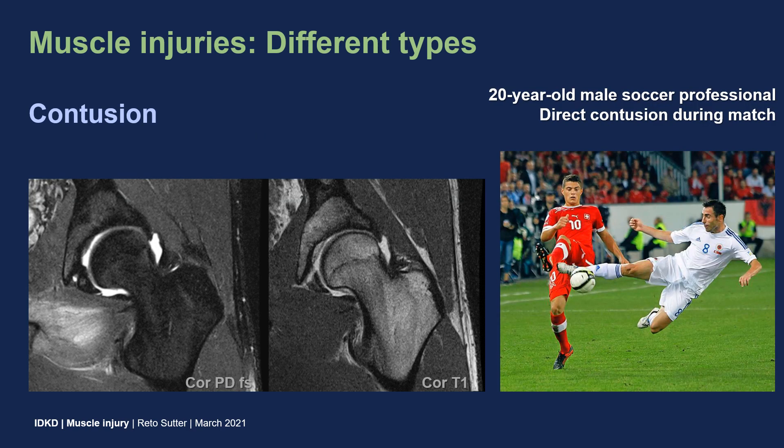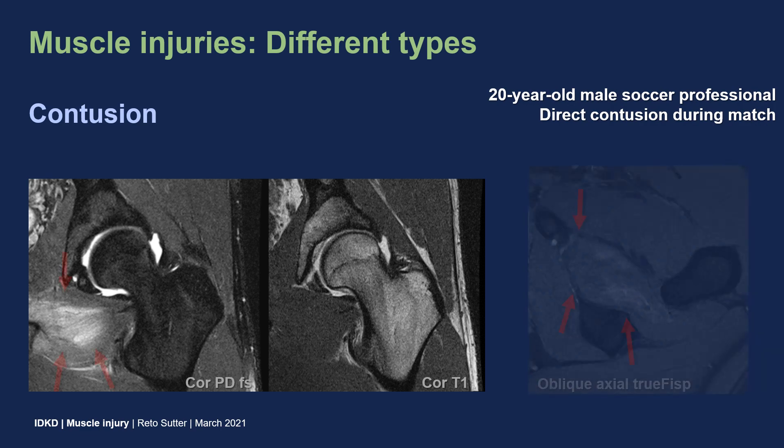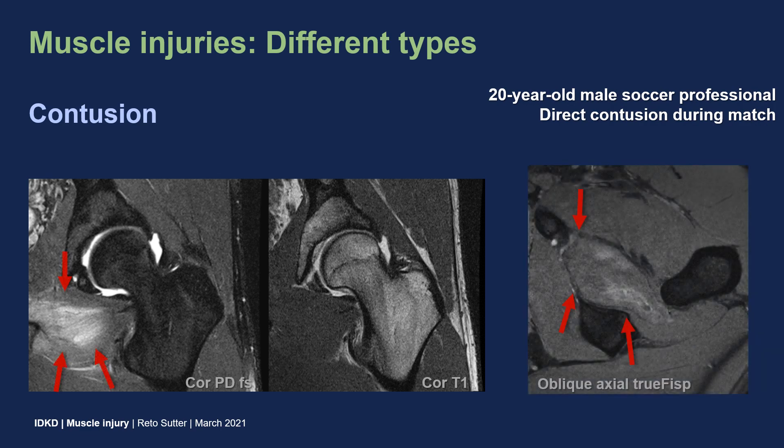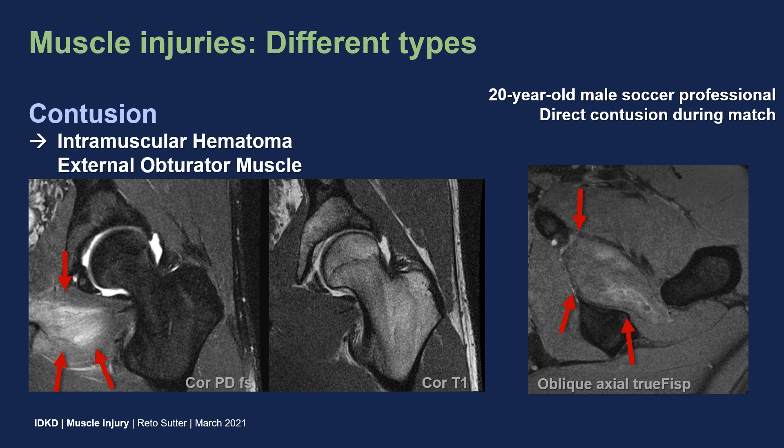The next type is contusion — a direct trauma. This soccer professional received a direct blow during a match, and at MRI we see intramuscular hematoma of the external obturator muscle.